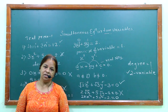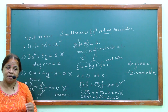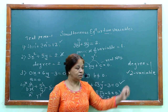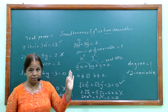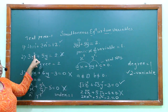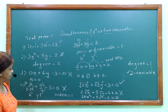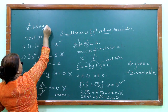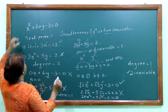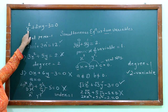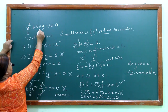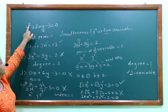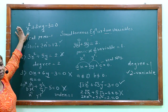So dear students, now you must have understood how to identify simultaneous equations in two variables. The conditions are: the degree of each variable should be 1, and there should be exactly 2 variables. For example, x squared plus 2xy minus 3 equals 0 has two variables x and y, but the degree is 2, so it cannot be a simultaneous equation.